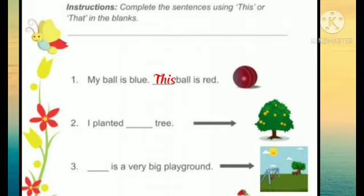Next sentence is, I planted dash tree. The tree is far. You can see the arrow that is showing the distance. So, I planted that tree.